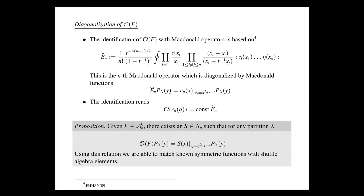Every shuffle algebra element from the commutative subalgebra can be matched with a symmetric function, so I can label shuffle algebra elements by symmetric functions: a power sum shuffle element, a homogeneous symmetric elementary shuffle algebra element, a Macdonald shuffle algebra element, and so on. There also exists a more interesting connection — that you can use shuffle algebras to compute commuting operators and also to diagonalize them. This diagonalization is of Bethe-ansatz type, producing Bethe equations with eigenstates in Bethe-ansatz form.